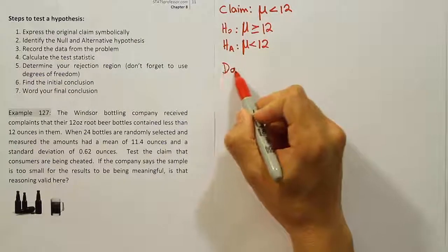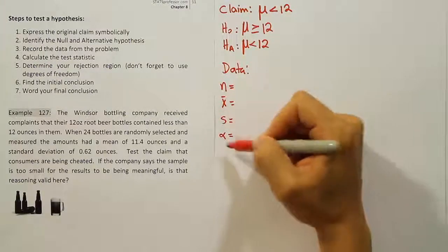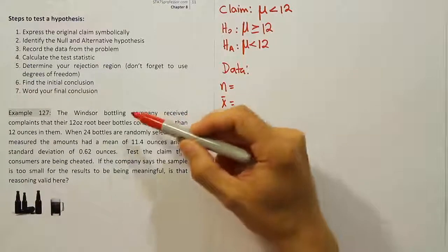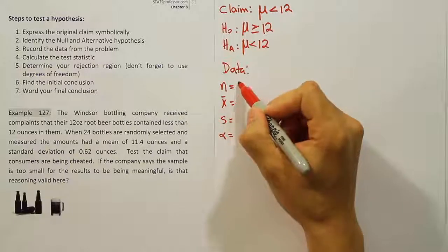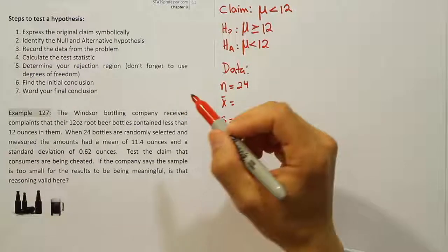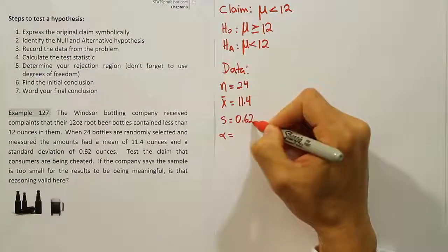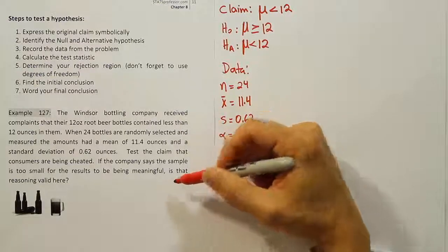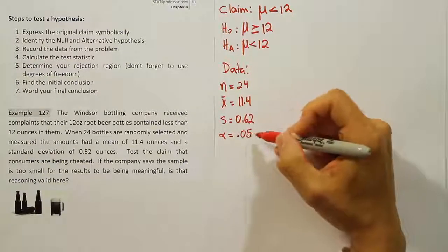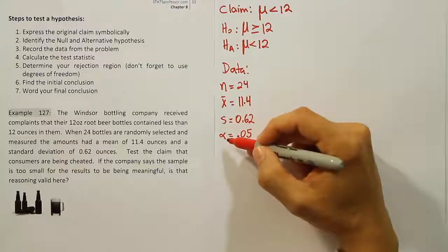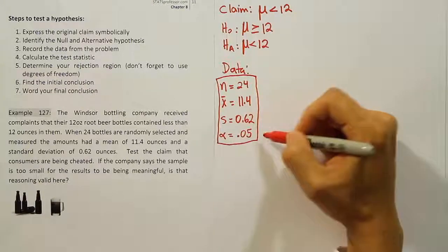To do that, we're going to need some data. We're going to collect data for the problem. We're going to take this right from the problem itself, and we should have these values whenever we're running a hypothesis test about the mean. So let's look at n here. It says when 24 bottles are randomly selected, so n is 24. And then it says that they had a mean amount of 11.4 ounces and a standard deviation of 0.62 ounces. The alpha is not given. There's no significance level. Well, normally in court cases, just like in statistics, the default alpha level is 0.05. So whenever a problem comes up in the court system that relates to statistics and hypothesis testing, they will choose 5% as a significance level.